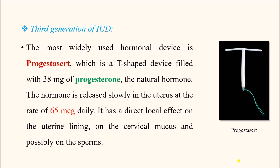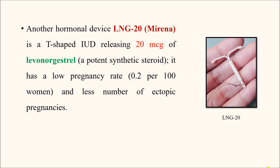Third generation IUDs are hormone-releasing devices. The most widely used is the Progesterone IUD — a T-shaped device filled with 38 milligrams of progesterone, which is the natural hormone. The hormone is released slowly in the uterus at the rate of 65 micrograms daily, and it has a direct local effect on the uterine lining, on the cervical mucus, and possibly on the sperm. The next device is the LNG20, also available under the name Mirena — a T-shaped IUD which releases 20 micrograms of levonorgestrel, which is a synthetic steroid.